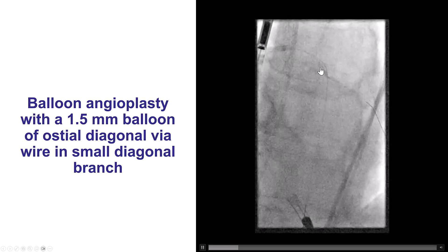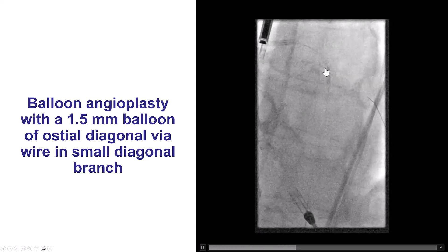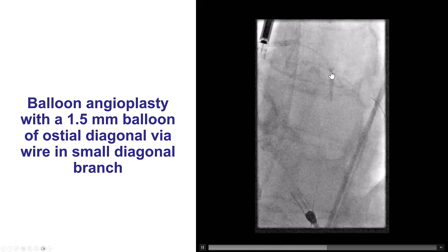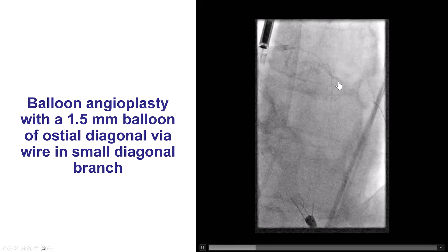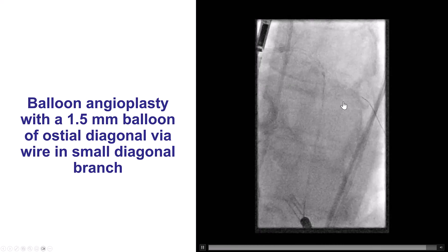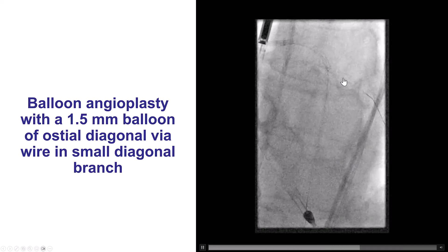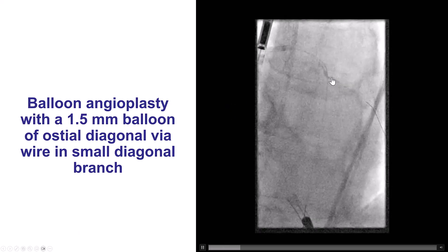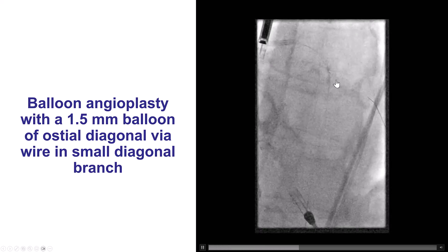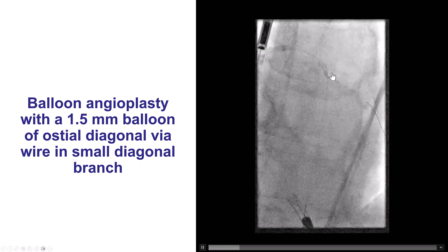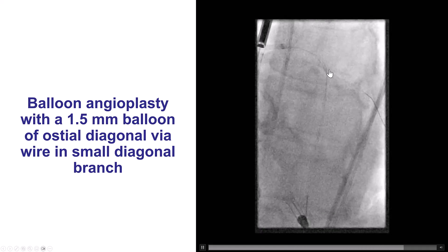Eventually, what we decided is to try to get a dual-lumen microcatheter over the existing guidewire into the superior branch and then use that dual-lumen as a means to advance another guidewire into that inferior branch of the diagonal. However, the Sasuke would not go into the diagonal because there was significant lesion at the ostium, so we did predilatation with a 1.5 mm balloon. What we are seeing here is an example of grenadoplasty, or balloon-assisted microdissection — essentially the balloon ruptured. Fortunately, it is a small 1.5 mm balloon, so no harm is done.